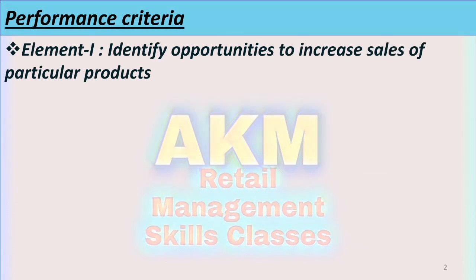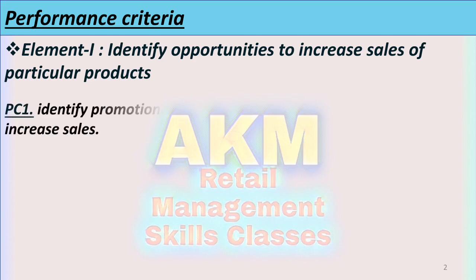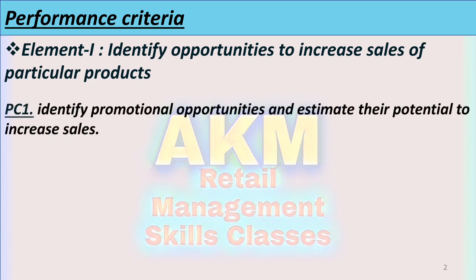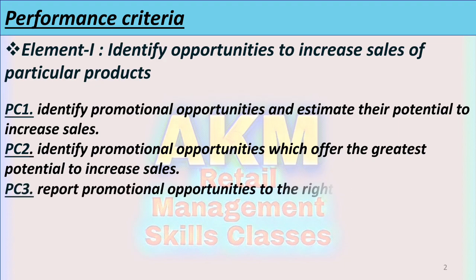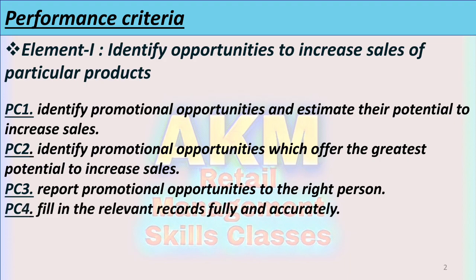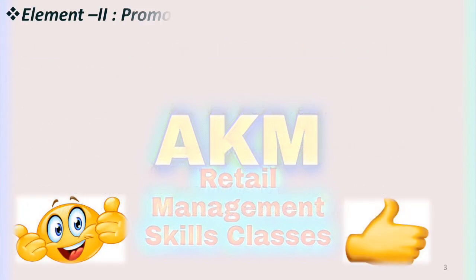Starting with Element One: Identify opportunities to increase the sales of particular products. The performance criteria are: PC1 — identify promotional opportunities and estimate their potential to increase sales; PC2 — identify promotional opportunities which offer the greatest potential to increase sales; PC3 — report promotional opportunities to the right person; PC4 — fill in the relevant record fully and accurately.